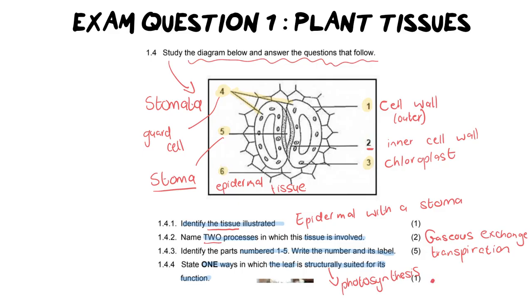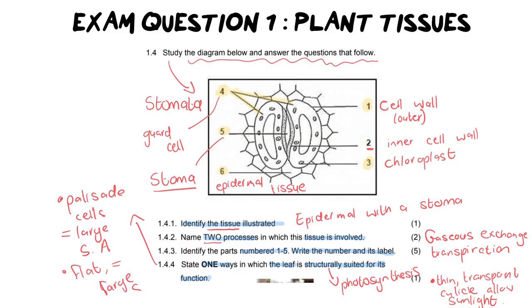The key one is it's thin. It has a transparent cuticle, and that's really important because it's going to allow sunlight in. You could also mention the palisades. Another option is the palisade cells. Those palisade cells have a large surface area, which means they can photosynthesize even more. Last but not least, another one is leaves are flat, which means they have, yet again, a large surface area. That is what they're looking for. But it's only one sentence for one mark.